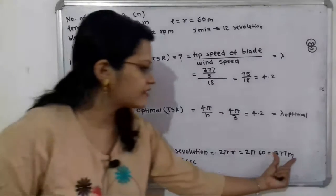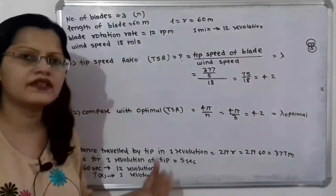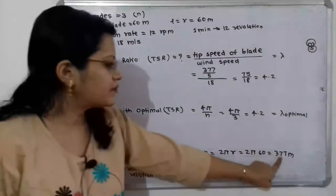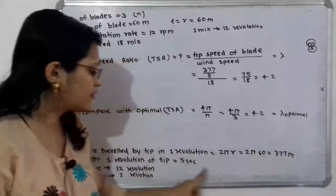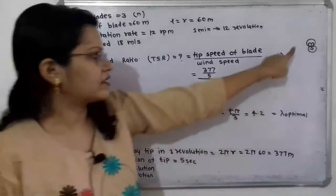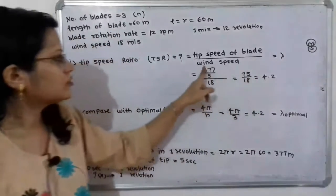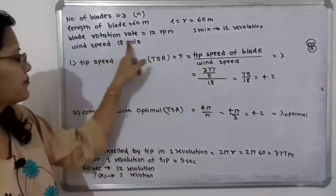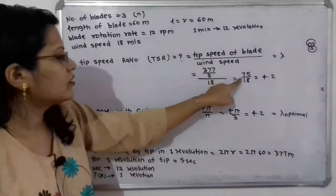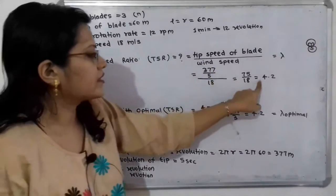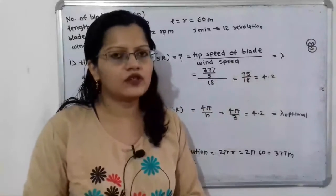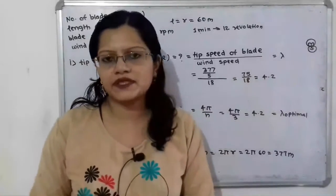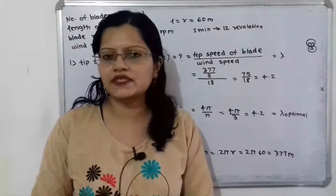Now we calculate the tip speed of the blade: 377 meters ÷ 5 seconds = 75.4 m/s. The tip speed ratio λ = tip speed ÷ wind speed = 75.4 ÷ 18 ≈ 4.2.